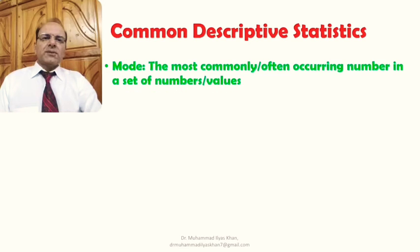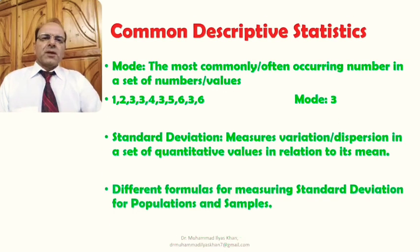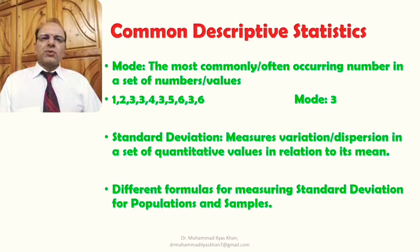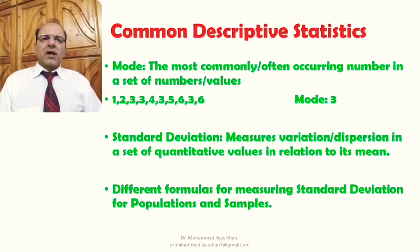Common descriptive statistics also include mode. Mode is the most commonly or frequently occurring number in a set of values. For example, in the set 1, 2, 3, 3, 4, 3, 5, 6, 3, 6, the number 3 appears 4 times — more than any other number. Therefore, the mode is 3, as it is the most frequently occurring number.